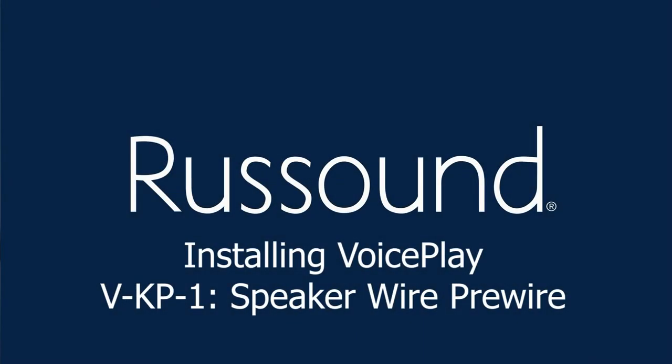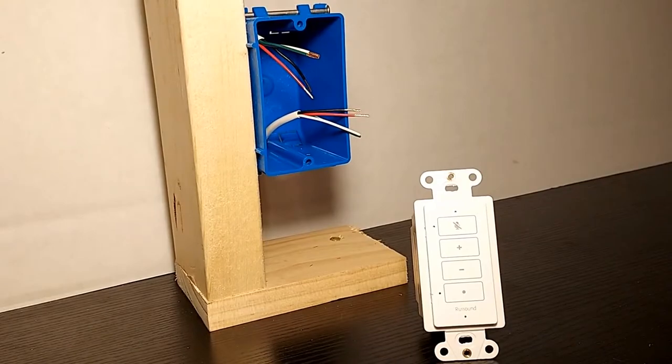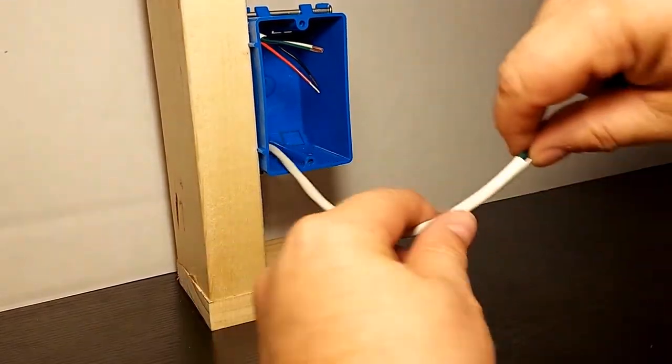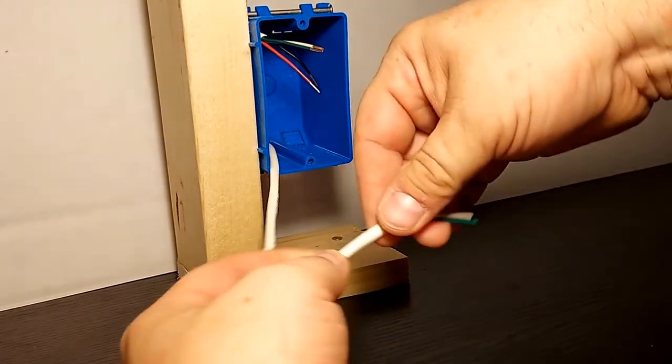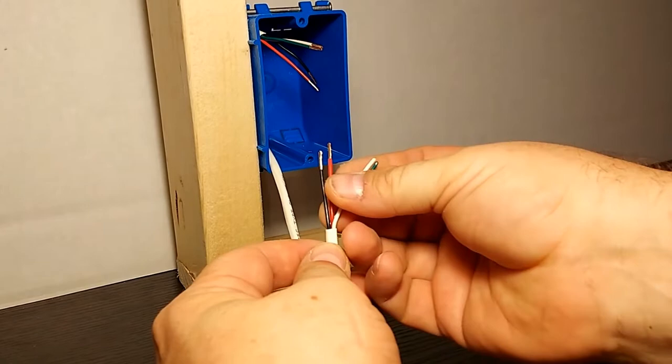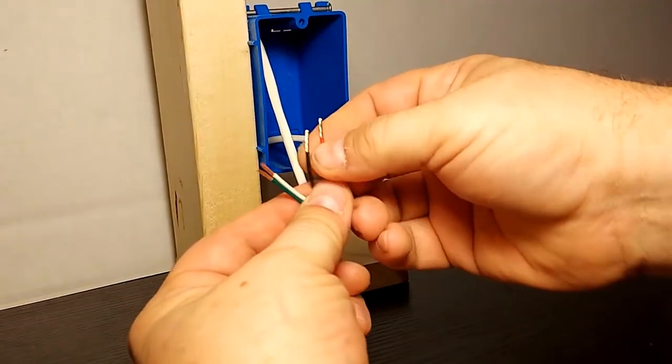For our next example, let's replace a traditional volume control in the wall with a Russound VKP1 keypad. In this case we'll be using the 16-4 that comes from the rack in order to power it up and we'll connect the speakers. So again we have our VKP1 and inside the box here's a 16-4. This one would have been coming from the amplifier when there was a volume control here, and one going to the speakers.